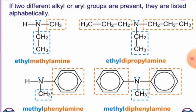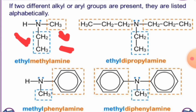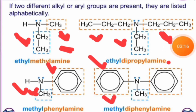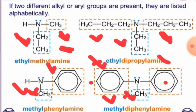Continuing the nomenclature of amines — if two different alkyl or aryl R groups are present on the nitrogen, we name them alphabetically. Here there is one methyl group and one ethyl group, so alphabetically it is ethyl methyl amine, which is a secondary amine. Where there is one ethyl group and two propyl groups, it is ethyl dipropyl amine. For an aromatic amine with one phenyl ring and one methyl group, alphabetically it is methyl phenyl amine. With two aromatic rings and one methyl group, it is methyl diphenyl amine — a tertiary amine.